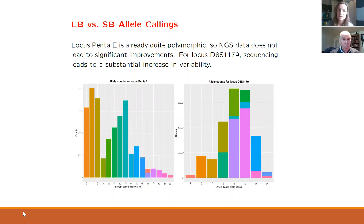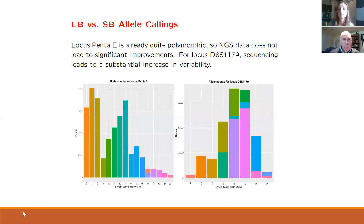Although sequencing data technically only increases the number of observed alleles, depending on the underlying sequence variation of course, we need to reassess existing models. So we will review methods for generating DNA profiles and we'll give an overview of probabilistic genotyping.